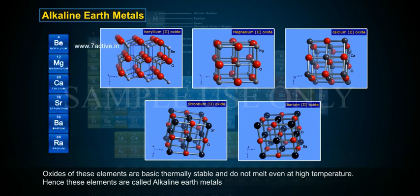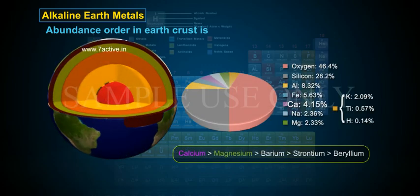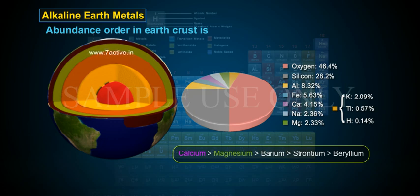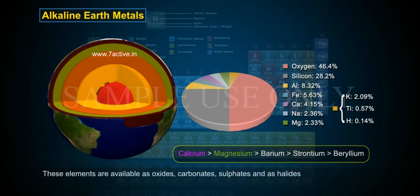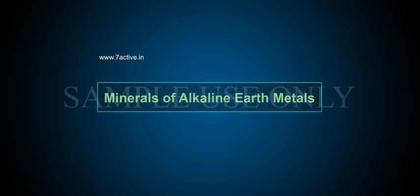Hence these elements are called alkaline earth metals. The abundance order in Earth's crust is: calcium > magnesium > barium > strontium > beryllium. These elements are available as oxides, carbonates, sulfates, and as halides.